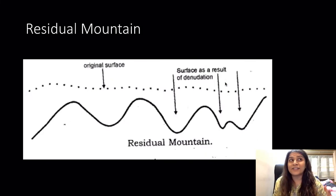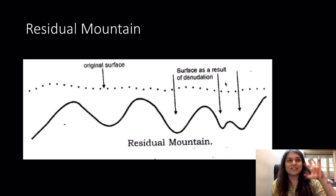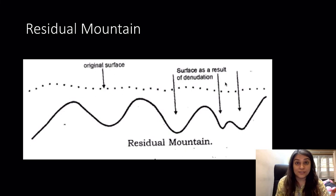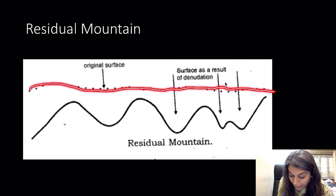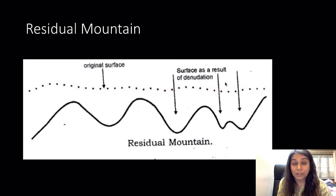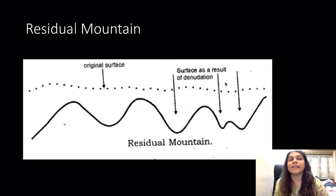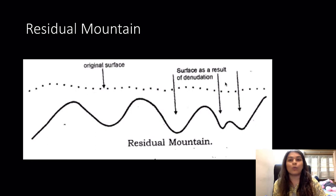Residual mountains are mountains which have suffered through denudation for millions of years — only their remnants remain. They are not in their original form; some hard peaks are still remaining. The Aravallis are an example. The rocks of these mountains are very hard because all the soft rock has been denuded and only hard surfaces remain.